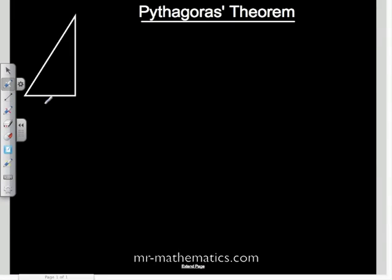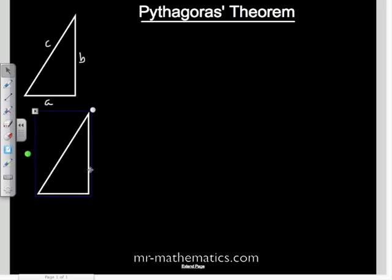We're going to look at proving Pythagoras' theorem with this right-angled triangle. I'm going to label our sides A, B, and C, where C is the hypotenuse.